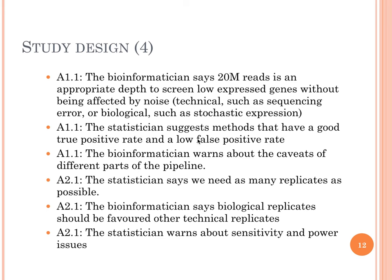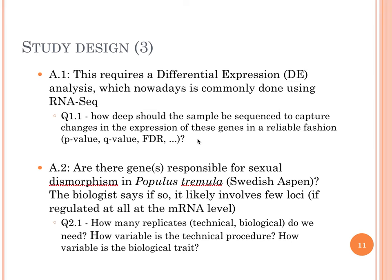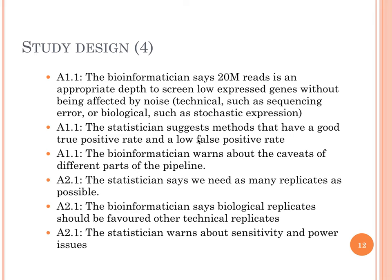For the second question — how many replicates do we need, and what type? The statistician says we need as many replicates as possible. The bioinformatician says biological replicates should be favored over technical replicates because we know that high-throughput sequencing technology itself is extremely highly reproducible, so technical replicates would be almost identical. Finally, the statistician warns us about the sensitivity and power issue, telling us that if we are looking for a gene that is lowly expressed, then we need to sequence deep enough so that we can pick up enough reads to confidently decide whether that gene is differentially expressed between the male and the female.